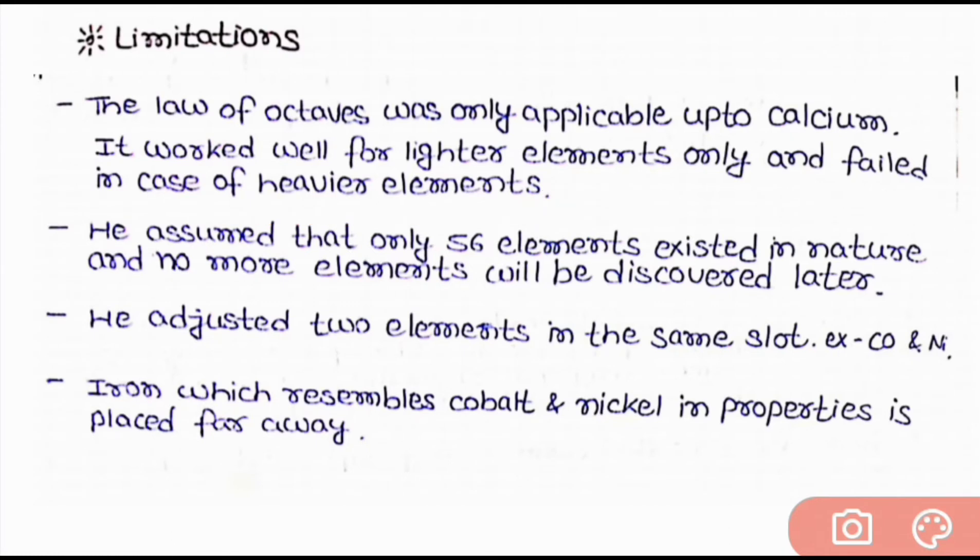Now the second limitation is he assumed that 56 elements existed in nature but in future more than 56 elements came to be present. Now next limitation is he adjusted two elements in the same slot, e.g. copper and nickel. And the last limitation is iron which resembles cobalt and nickel in property is placed away from them.